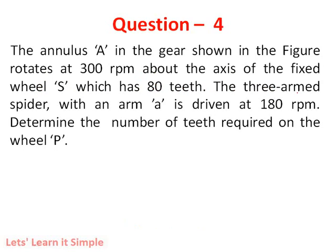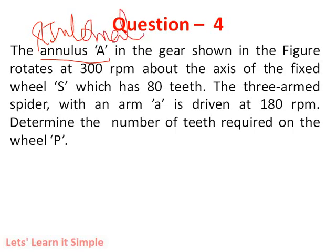Now this is the description of the problem. We have an annulus A. Annulus is another name for internal gear. In case of an internal gear, the direction of rotation of its mating gear will be same as that of the internal gear. One such analysis is given with a speed of rotation of 300 RPM about the fixed wheel S, where S stands for Sun in the gear arrangement, which has 80 number of teeth.